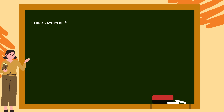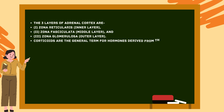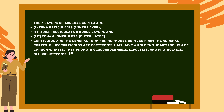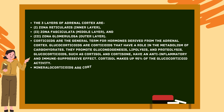The three layers of the adrenal cortex are: (1) zona reticularis — inner layer, (2) zona fasciculata — middle layer, and (3) zona glomerulosa — outer layer. Corticoids is the general term for hormones derived from the adrenal cortex. Glucocorticoids are corticoids that play a role in the metabolism of carbohydrates; they promote gluconeogenesis, lipolysis, and proteolysis. Glucocorticoids such as cortisol and cortisone have anti-inflammatory and immunosuppressive effects.